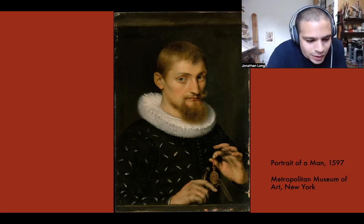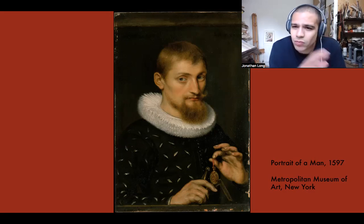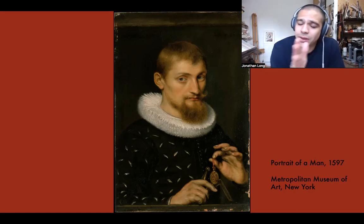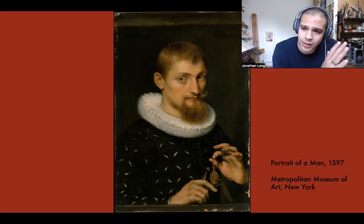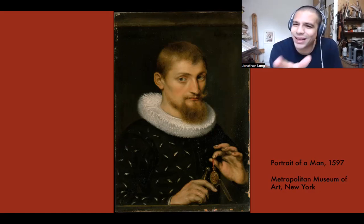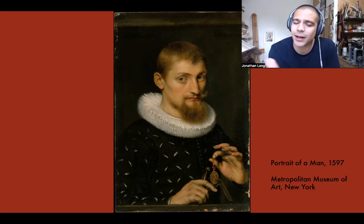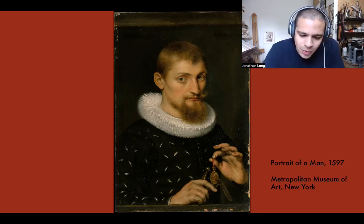Rubens is one of the most influential artists of the entire 17th century and one of the great painters of post-Renaissance Europe. We're still in the early modern period, which spans from the twilight of the Middle Ages through the Renaissance up until the French Revolution. Rubens is part of the post-Renaissance world and is one of the main artists of the early Baroque period.